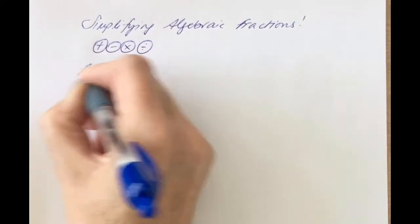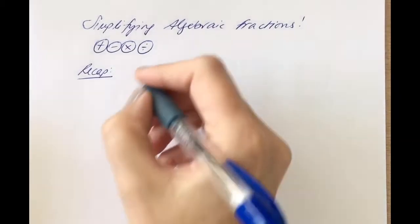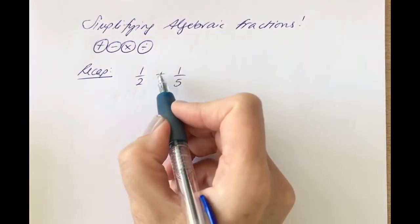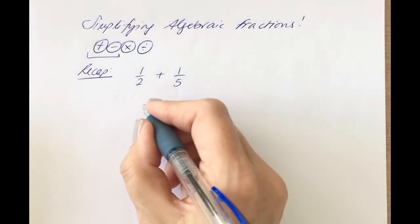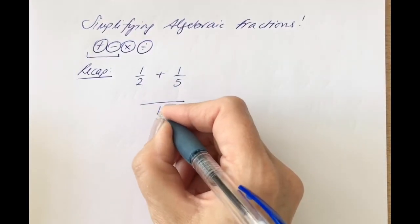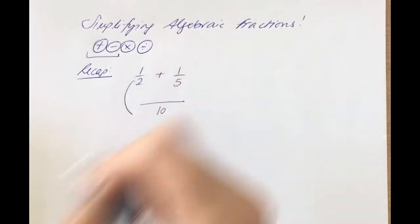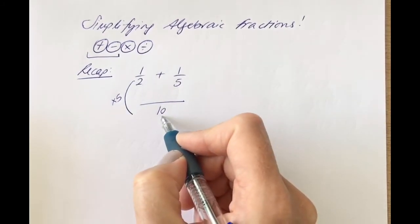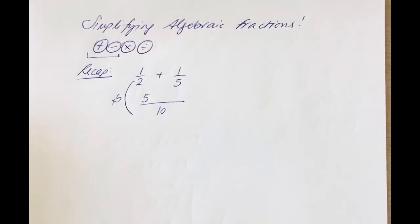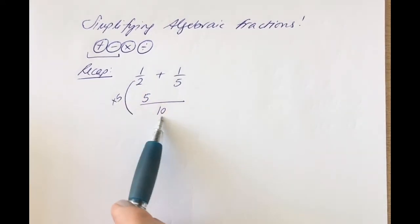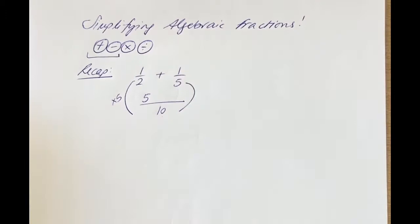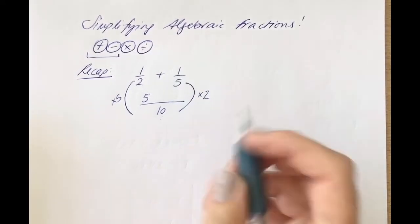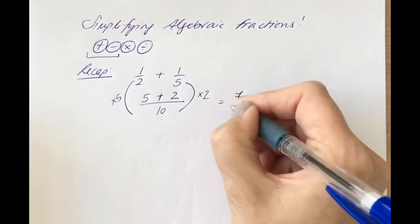Let's do a little recap first on how we deal with adding normal fractions. Say you had a half plus one-fifth. When adding or subtracting fractions, we have to get a common denominator. Two and five both go into 10, that would be the lowest common multiple. What have you done to two to get 10? You've multiplied by five, and you have to do the same to the top. Whatever you do to the bottom, you've got to do to the top. So multiplying the bottom by five, multiply the top by five as well. What have you done to five to change it to 10? You've multiplied by two. One times two is two. So we have five plus two over 10, which is seven over 10.